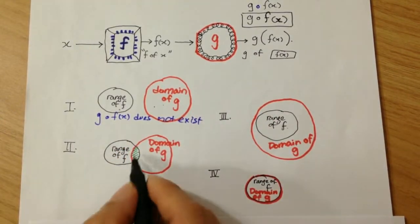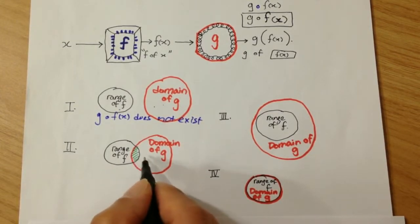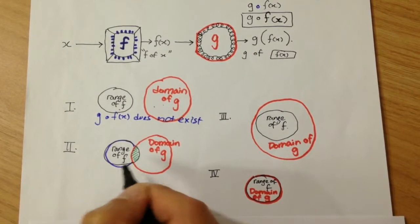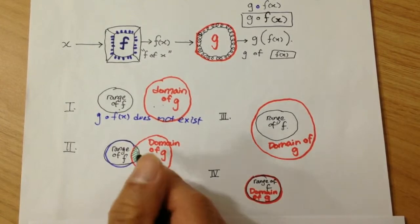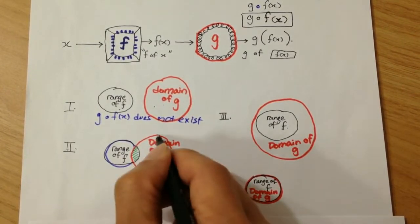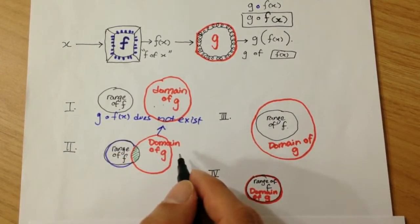Well, in this case, some of the output of f is acceptable as the input of g. But also, some of them are not acceptable. So in mathematics, in this case, we also consider the composition of g of f does not exist.